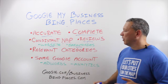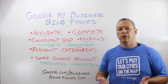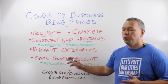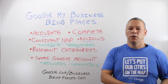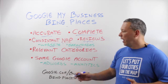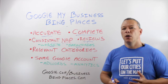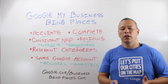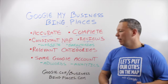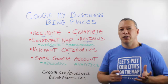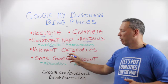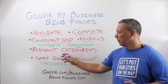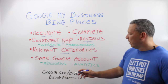The next thing is to make sure the categories you choose are relevant. When creating your listing, you'll have the opportunity to choose different categories. Make sure they're the most relevant to your business, because Google uses those categories to match your business to what people are searching for. If you can't find a perfect match, search as if you were a customer looking for your business, and look at what categories your top competitors are using to find something very relevant or close.